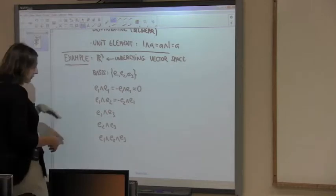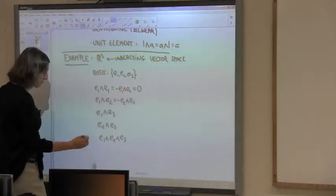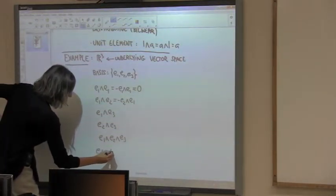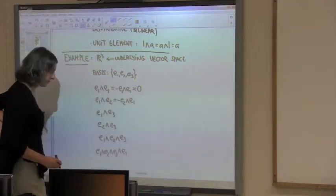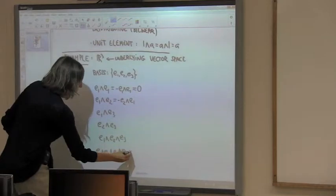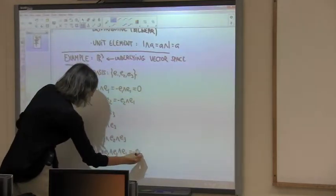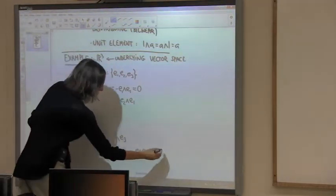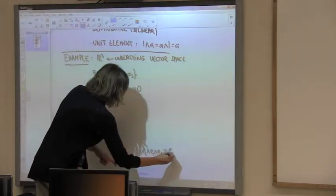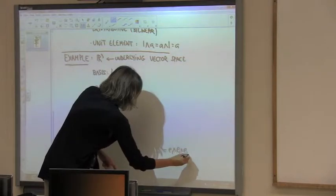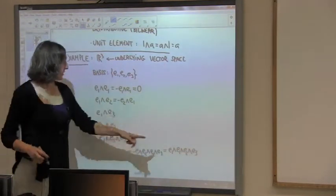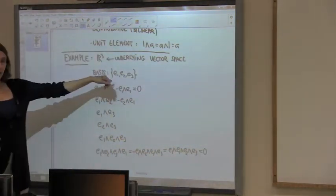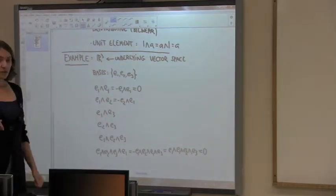If you keep adding vectors with one repeated, you get zero. For example, e1 ∧ e2 ∧ e3 ∧ e1: by associativity and anti-symmetry you can swap to get −(e1 ∧ e2 ∧ e1 ∧ e3), and since e1 appears twice it becomes zero. So as soon as more than three elements are wedged and one is repeated, the result is zero.